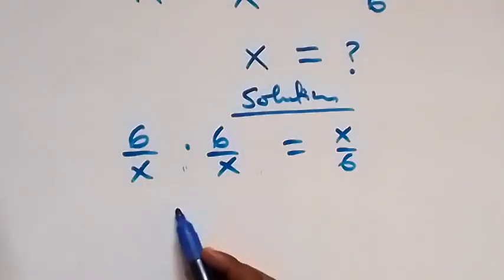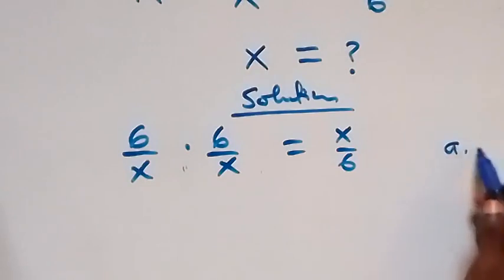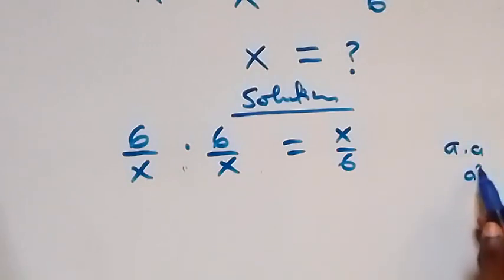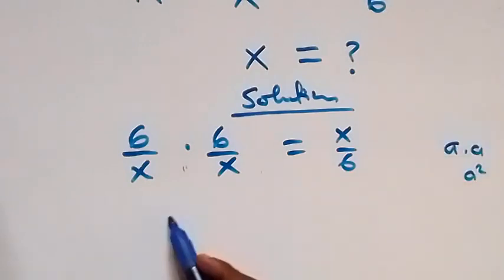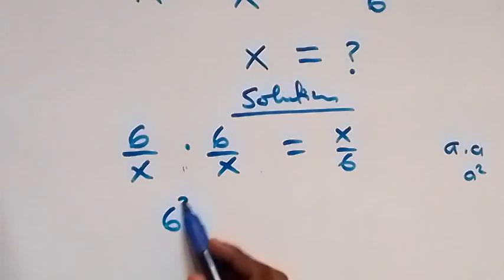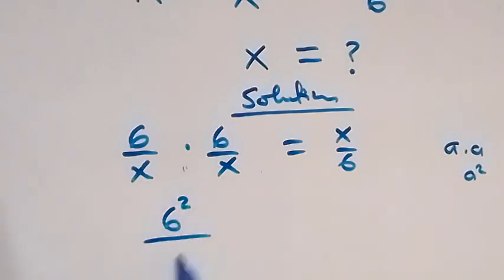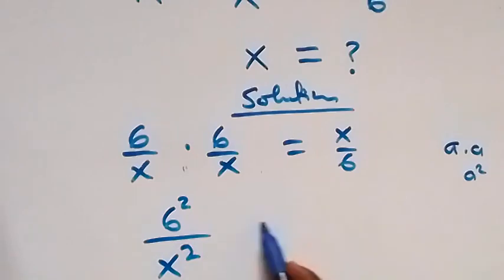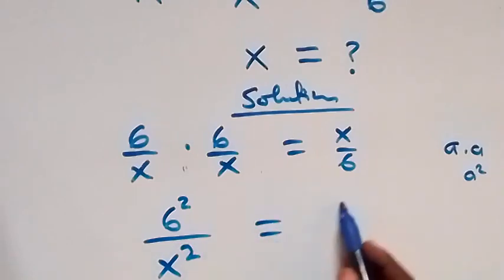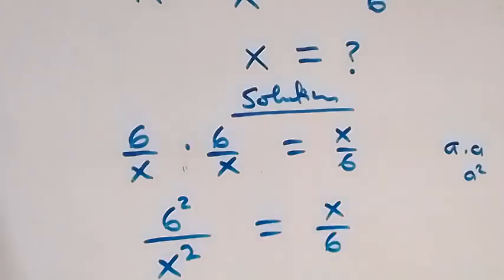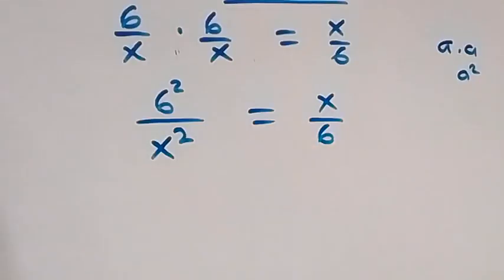We can also write this using the rule that a times a equals a squared. So this becomes 6 squared over x squared, equals x over 6.